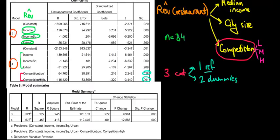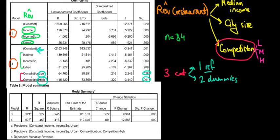First let's see whether these dummy variables are significant. What are we testing by adding them? The dummy variables represent competition — we want to know whether competition affects revenue, whether the presence of other restaurants affects how much revenue our specific restaurant will make. We're testing the joint effect of competition, and since two of those variables are in the model while one is the reference category included in the constant, we test whether adding these two dummies significantly increases the R-squared.